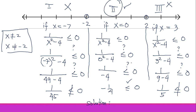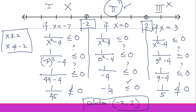The solution is Region 2 only. The boundary for Region 2 is negative 2 and positive 2. Since both critical numbers are from the denominator, we use parentheses (open interval). The final solution is (−2, 2). I hope you're learning something, and I'll see you in my next video.